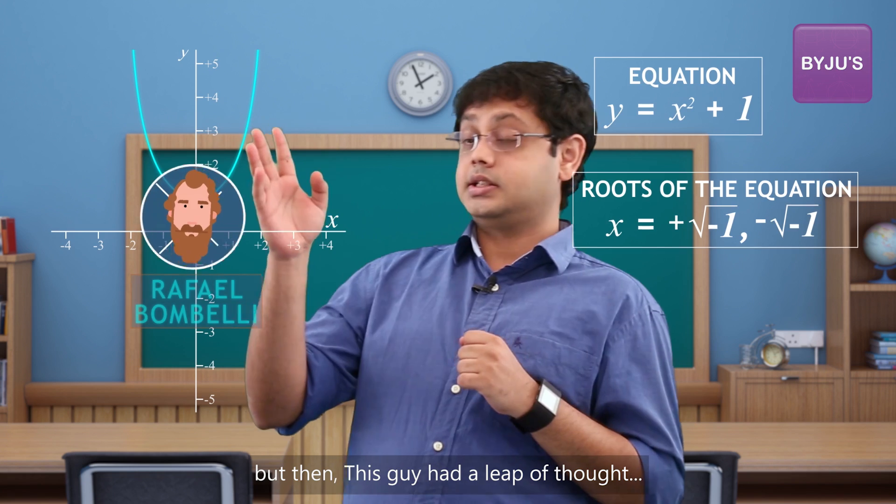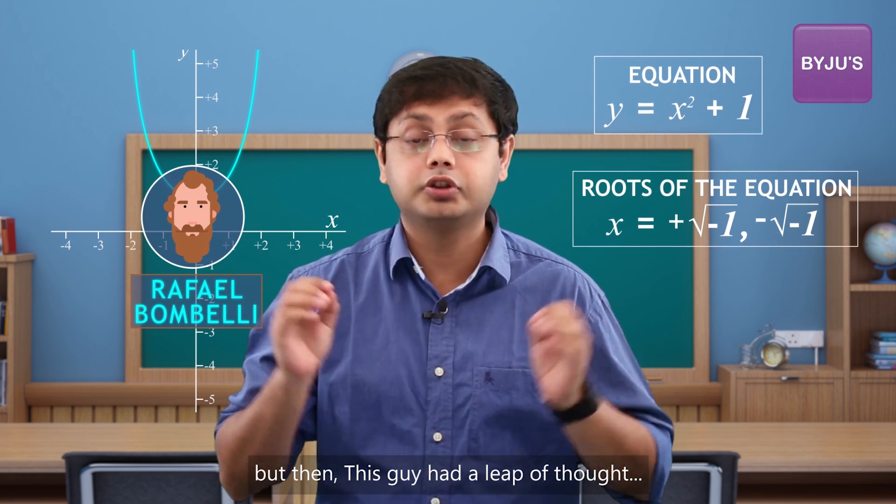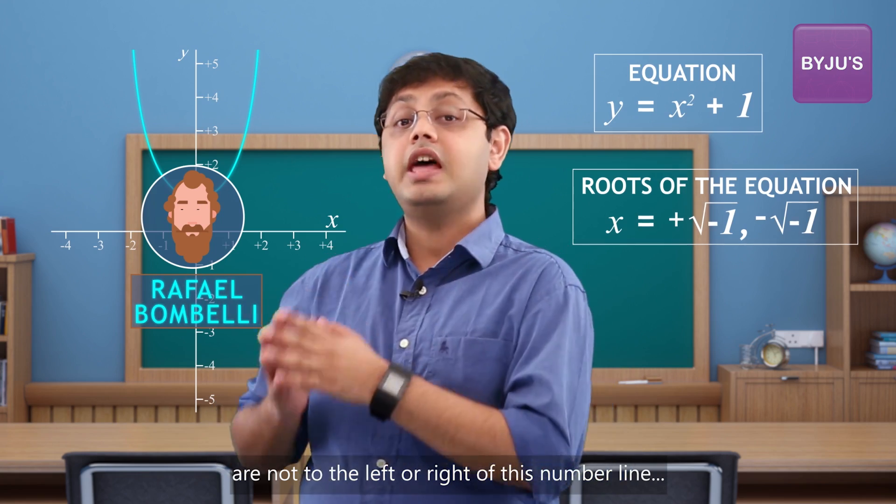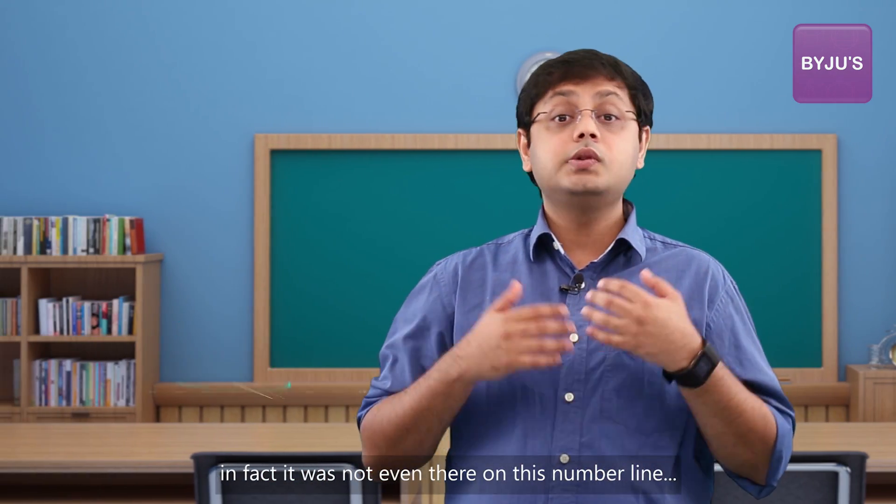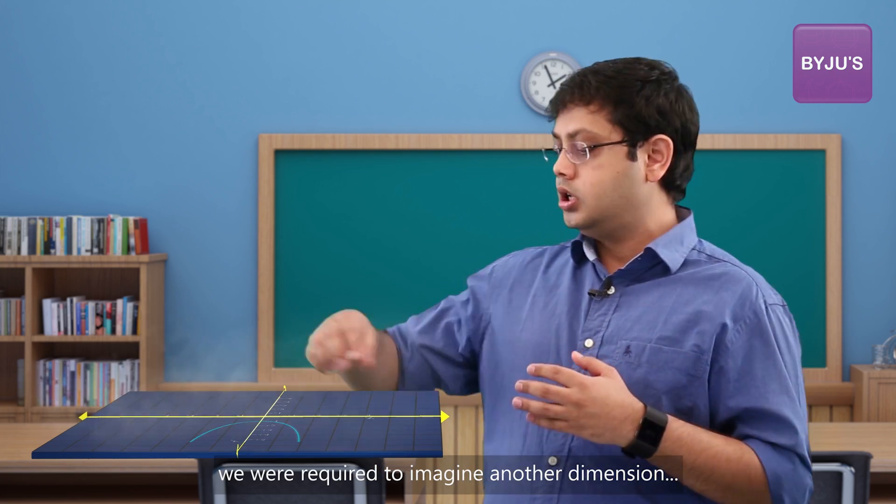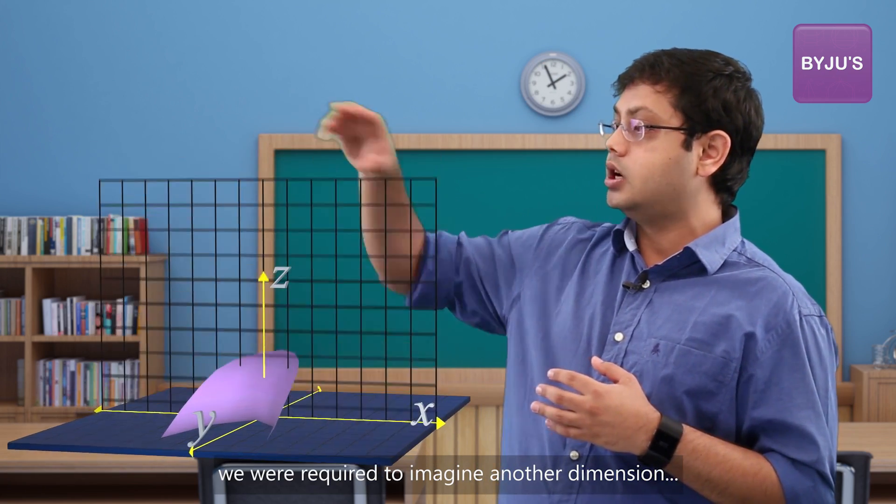But then this guy had a leap of thought. He said our missing numbers are not to the left or right of this number line. In fact, it was not even there on this number line. We were required to imagine another dimension.